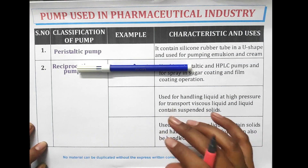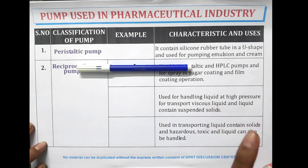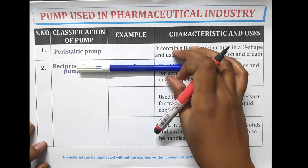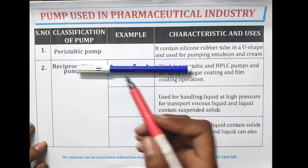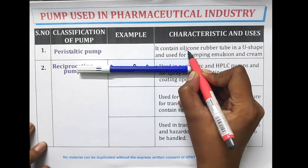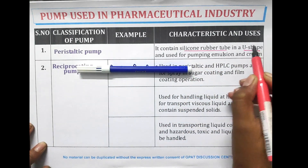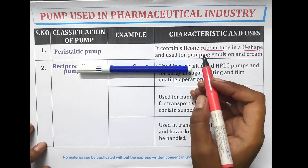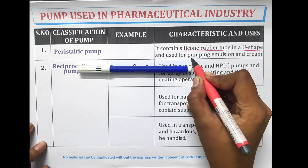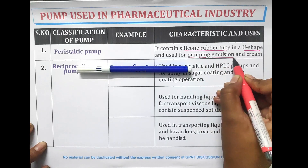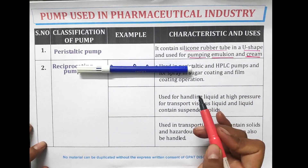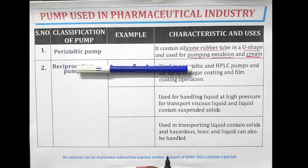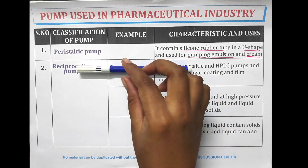The classification of pumps: the first one is the peristaltic pump. This pump contains a silicon rubber tube in a U-shape and is used for the pumping of emulsions and creams.